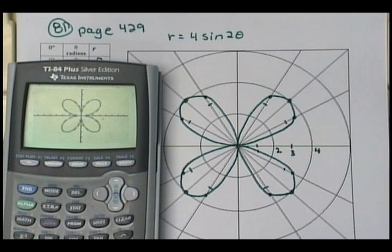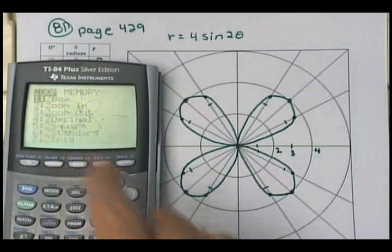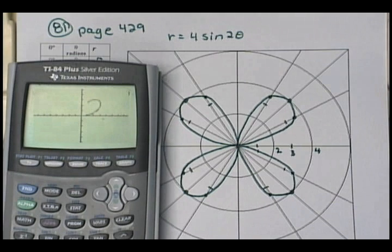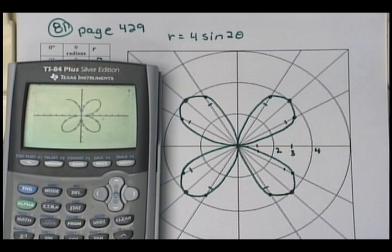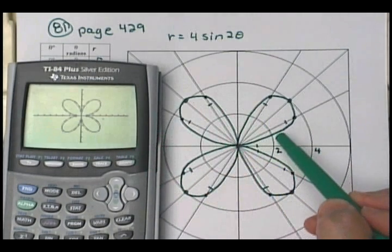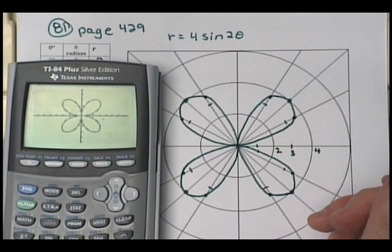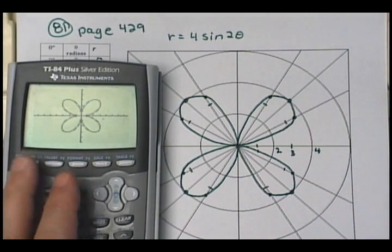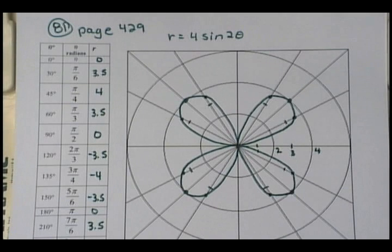I'm going to do zoom 5 to make it look a little better — zoom 5 puts your calculator back in square mode. Isn't that pretty? Do you like the petal ones? So are we all right with section 8.4? Sometimes remember you have to use your 15-degree increments on some of these graphs, so just keep that in mind. Does that help you with what you had to do here?